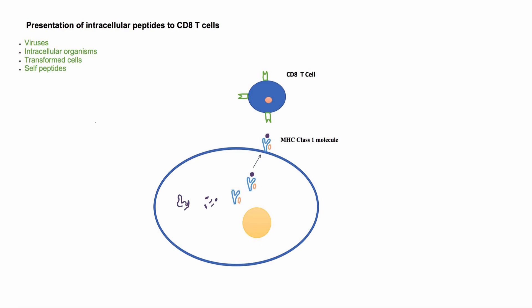These proteins are first broken down to smaller peptides. These peptides then combine with HLA class 1 molecules and are presented on the surface of the cell. On the cell surface, HLA class 1 molecules are recognized by CD8 T cells. These are effector cells and will result in lysis of the cell presenting abnormal proteins. The resulting lysis of the cell will help in eradication of infection or prevent progression of a tumor.